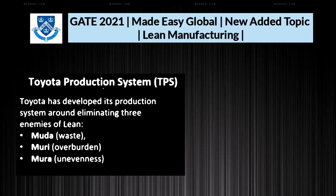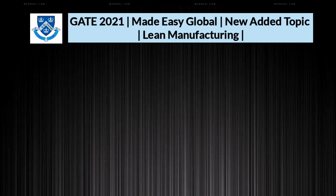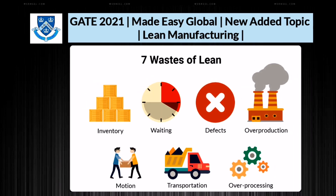The Toyota Production System was developed around eliminating three enemies of lean. The first is Muda, which stands for waste. The second is Muri, which stands for overburden. The third is Mura, which stands for unevenness. In the diagram you can see images representing these three enemies of lean manufacturing.